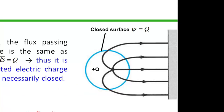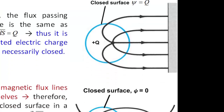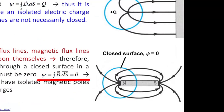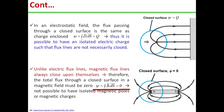Now, unlike electric field lines, magnetic flux lines always close upon themselves. So the total flux through a closed surface in a magnetic field must be zero. That is ψ equal to closed integral B dot ds, and this is equal to zero.